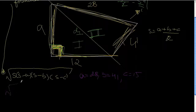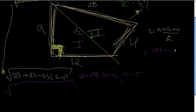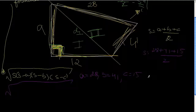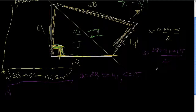So first we need to calculate the semi-perimeter. It's going to be 28 plus 41 plus 15, over 2. 28 plus 41, that's 69, and then that's 69 plus 15, that's 84. And the half of 84 is 42.